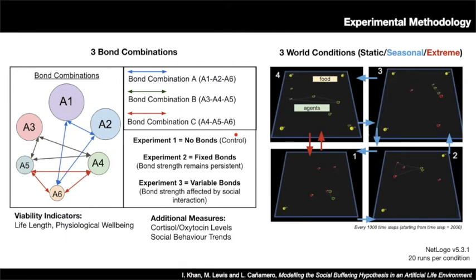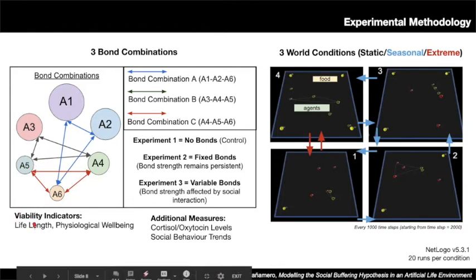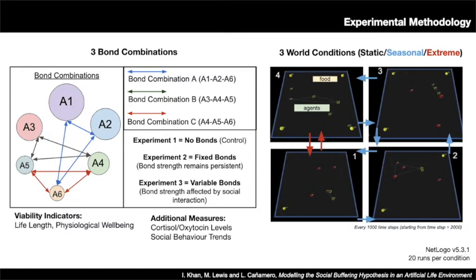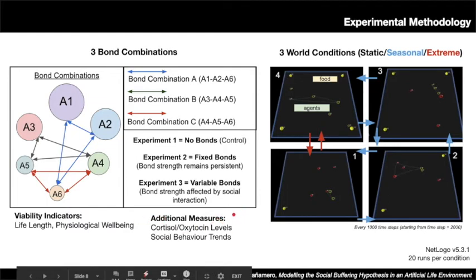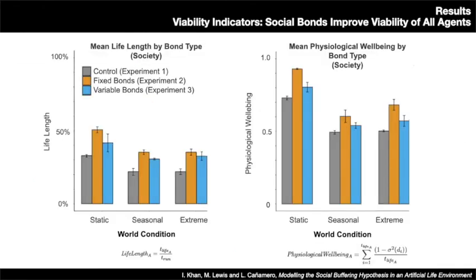We conduct three experiments: a control condition with no social bonds; experiment two with bonds remaining at a fixed maximum strength; and experiment three where bond strength starts at maximum but is impacted by positive and negative social interactions, so strength can vary over time. We report results using two viability indicators: life length, denoting how long an agent lived, and physiological well-being, describing the homogeneity of the internal variables social need and energy. We also record cortisol and oxytocin levels and social behaviour trends — grooming and aggression.